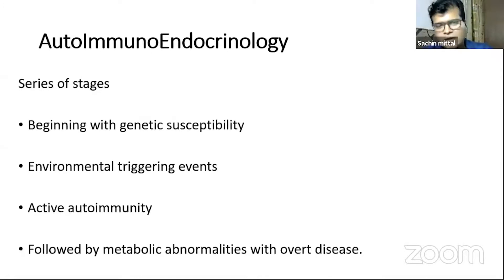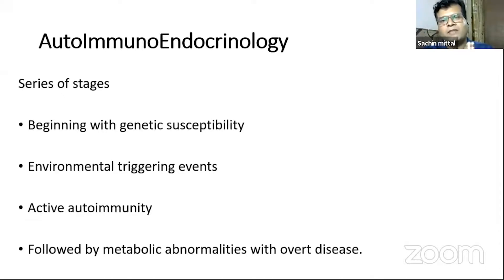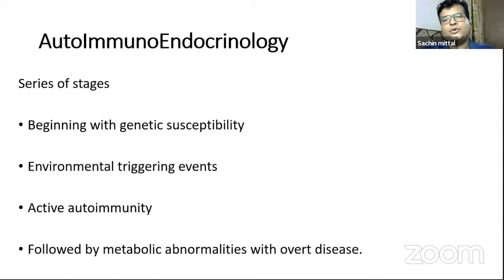If you look at the journey of any autoimmune disorder — whether autoimmune endocrine disorder or any endocrine disorder — it basically begins with genetic susceptibility. On top of that, there is an epigenetic event or a trigger, which can be environmental or infectious, followed by the development of serological autoimmunity, then destruction or dysregulation of tissue significant enough to cause a metabolic abnormality, which manifests as overt disease.